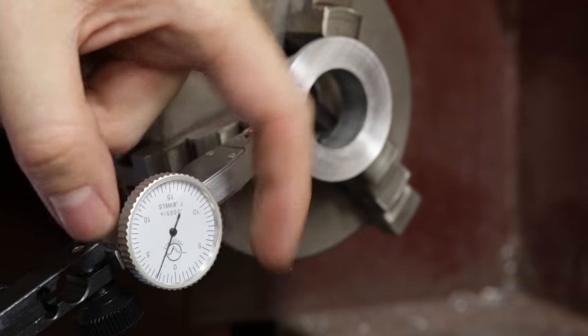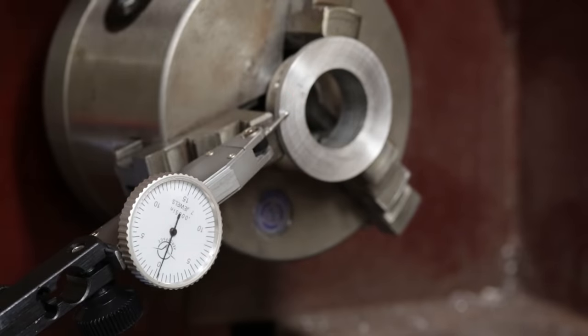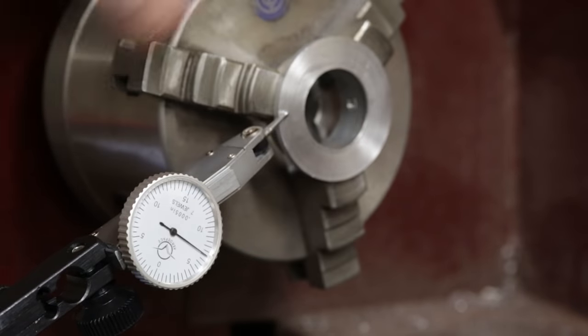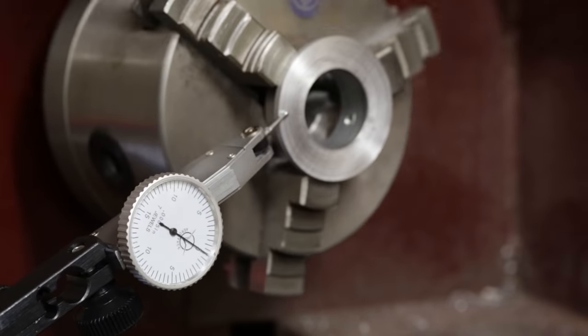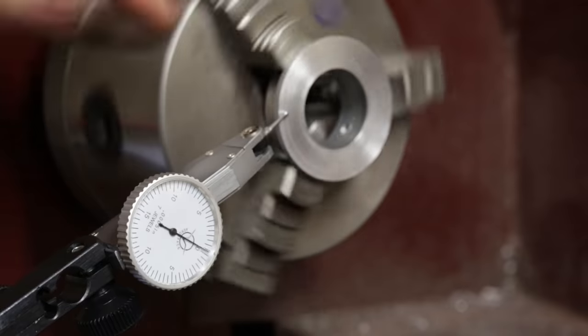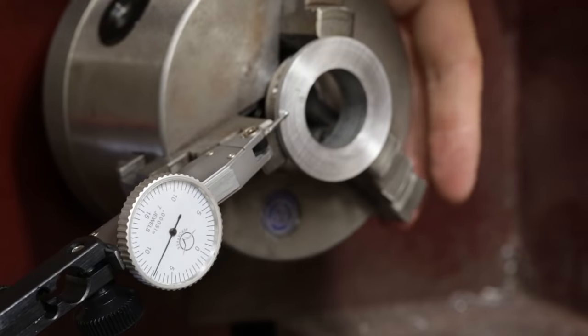I've got an indicator mounted up against this test piece that I had and if we zero it out and spin it around you can see it's moving somewhere around 15 clicks. Each click is a half a thousandth so overall it's moving anywhere between seven and eight thousandths of an inch.